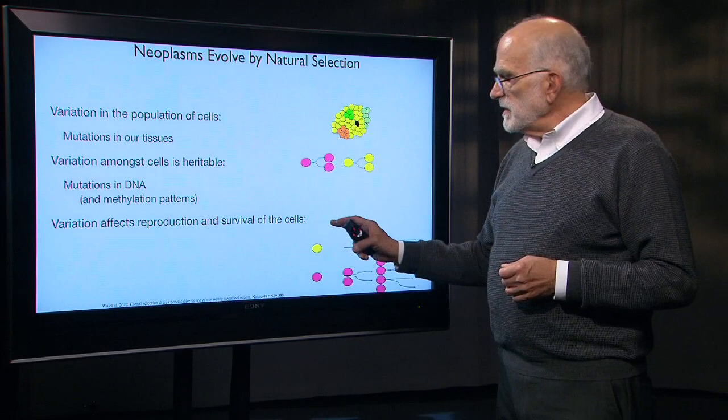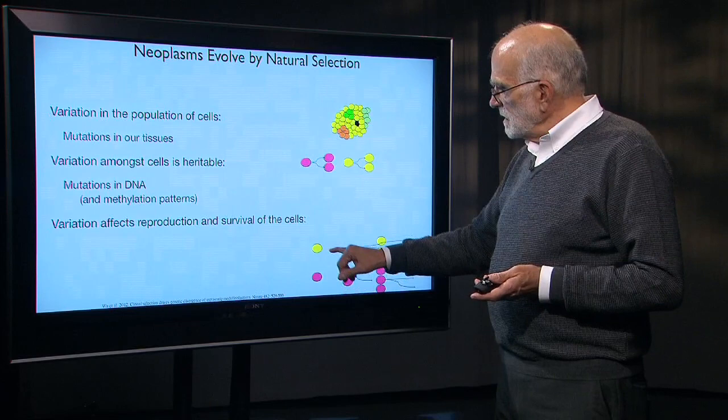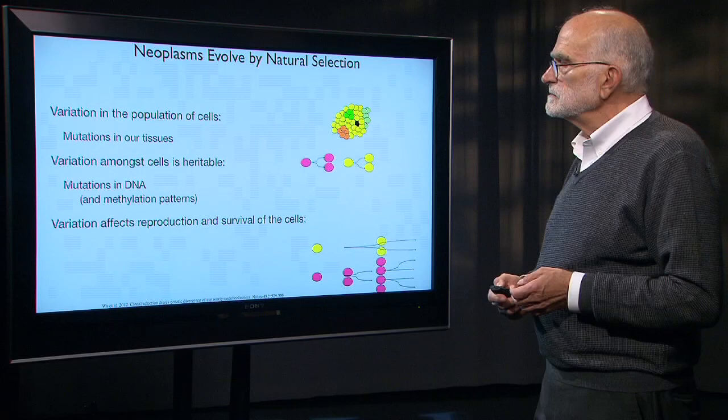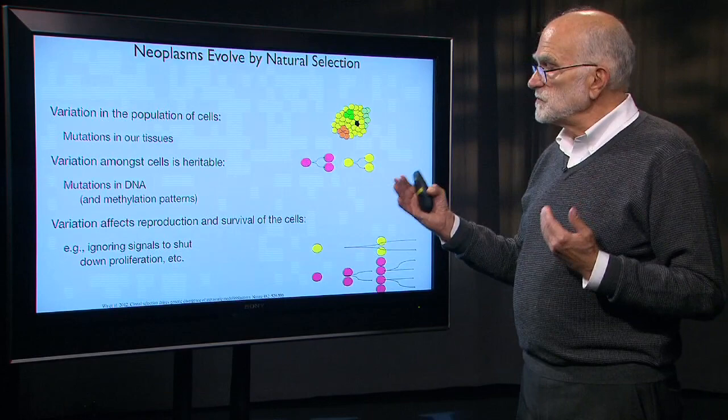The variation is affecting the reproduction and survival of the cell. In this case, the yellow cell is producing fewer copies than the pink cell. And some of the mutations will cause the cells to ignore signals to shut down proliferation — they will continue to grow.